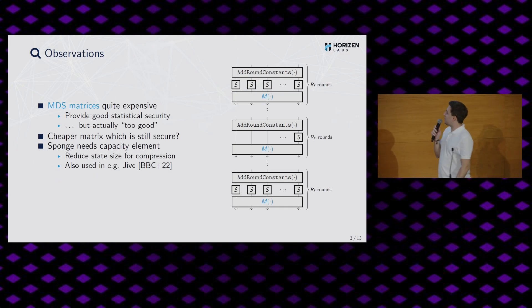All right, so these are the observations we made and these are the most important ones. These MDS matrices are actually quite expensive. So they're very good in terms of statistical security. This is related to things like the branch number and so on. But actually it's, for our purposes, something like too good. So it gives very, very good security but higher than can actually be achieved. So our question was, can we find a cheaper matrix which is more efficient to implement and more efficient to compute, but which still provides the same security level?